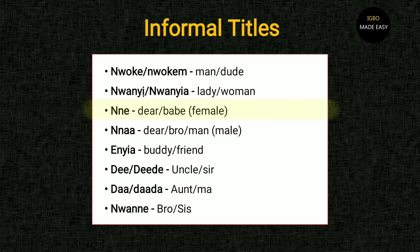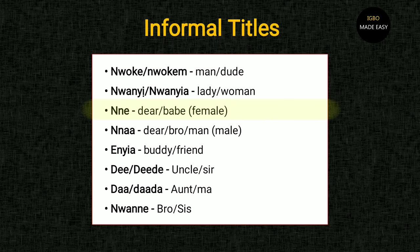The next one is nne. This is not the same as nne meaning mother — nne with a different tone is a female person you consider dear. It's a term of endearment for a younger female person, or a peer — like saying 'babe' or 'dear.' If you watch a lot of Nollywood, you hear gossip buddies start a conversation with 'nne, you won't believe what happened today.' Similarly, nna is a term of endearment for a younger male person — your bro or your man.